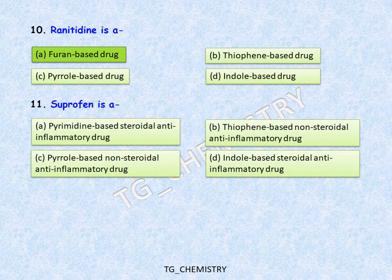Next question: suprofen is which type of drug? Options are: A, pyrimidine-based steroidal anti-inflammatory drug; B, thiophene-based non-steroidal anti-inflammatory drug; C, pyrrole-based non-steroidal anti-inflammatory drug; D, indole-based steroidal anti-inflammatory drug. Suprofen is a non-steroidal anti-inflammatory drug containing thiophene as the heterocyclic backbone, so the correct answer is option B.